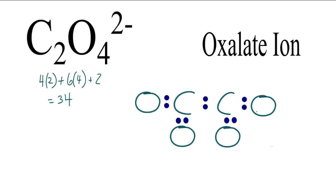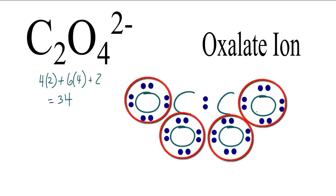Let's complete the octets on the oxygens, and then go to the middle and fill the carbons in, if we have enough electrons. So now all of the oxygens have 8 valence electrons, an octet. We've also used 34 valence electrons.